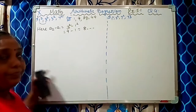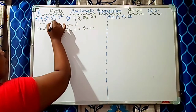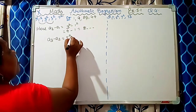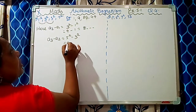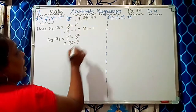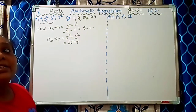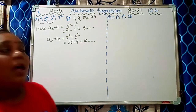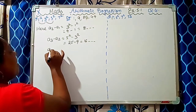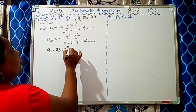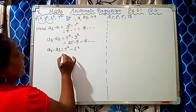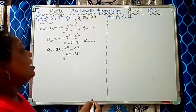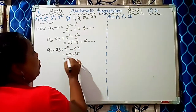Next, A3 minus A2: that is 5² minus 3², which is 25 minus 9, giving us 16. Now A4 minus A3: that is 7² minus 5², which is 49 minus 25, and the difference coming is 24.